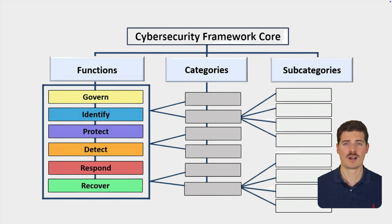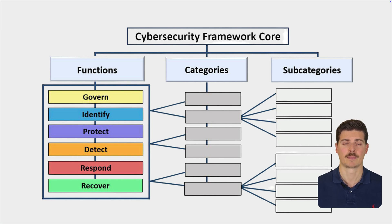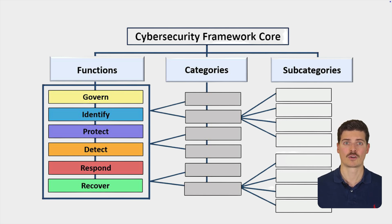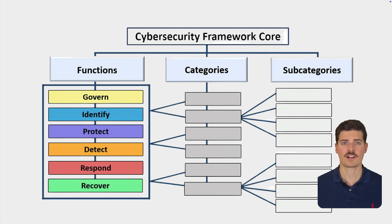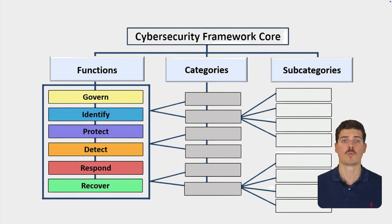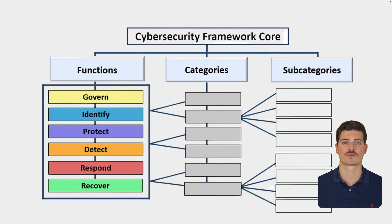Let's make sense of how the CSF Core is organized in a straightforward way. The CSF Core has a specific setup that helps us manage cybersecurity effectively. The setup is divided into three main parts: functions, categories and subcategories. At the top level we have six main areas called functions. These functions are broad actions we take to manage cybersecurity, such as identifying what needs protection and responding if there is a security issue. Within each of these six functions there are categories, which group together similar kinds of outcomes that support the overall objectives of the associated function.